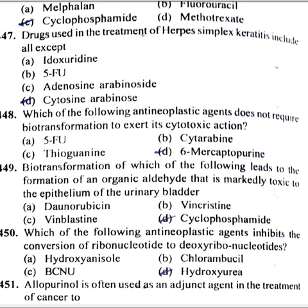Which antineoplastic agent does not require biotransformation to exert its cytotoxic effect? 6-mercaptopurine. Biotransformation of which of the following leads to formation of acrolein, an organic aldehyde markedly toxic to the epithelium of the urinary bladder? Cyclophosphamide. Which antineoplastic agent inhibits the conversion of ribonucleotides to deoxyribonucleotides? Hydroxyurea.